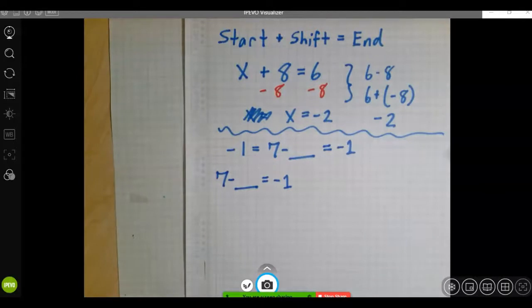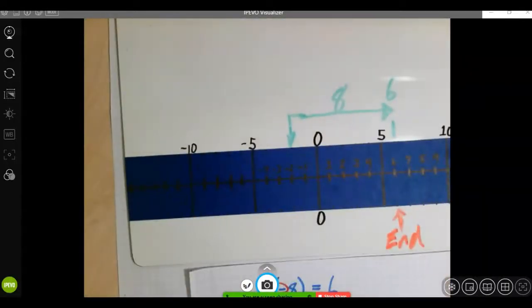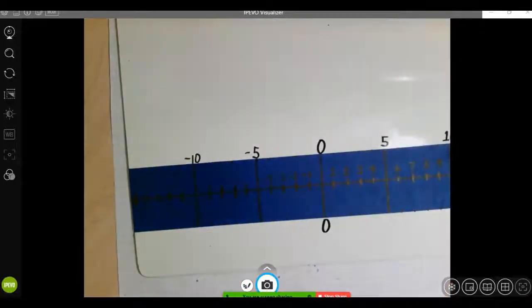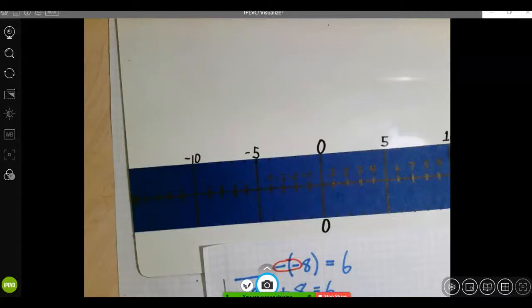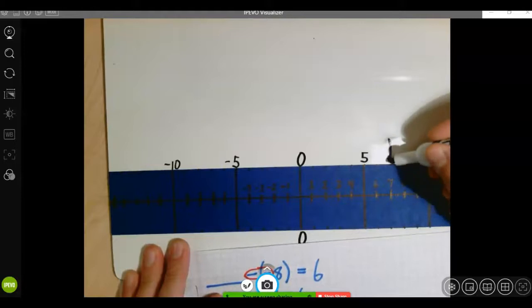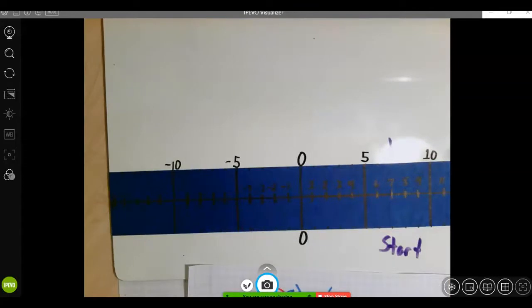So if we think this out on our actual number line, I've got to erase what we had there from the last problem. So our start point is at 7. It was positive 7, right?